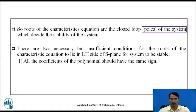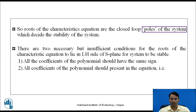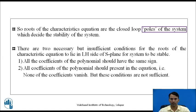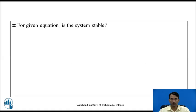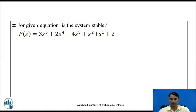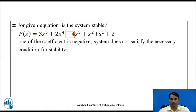The two necessary conditions are: first, all the coefficients of the polynomial should have the same sign; and second, all coefficients of the polynomial should be present in the equation — that is, none of the coefficients should vanish. However, these two conditions are not sufficient to determine whether a system is stable or not. By observing the given equation, you can say the system is not stable because one of the coefficients is negative, so it does not satisfy the necessary condition for stability.